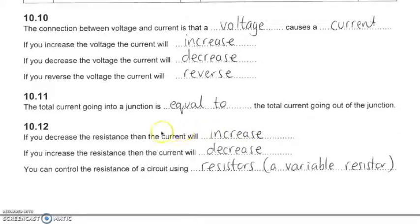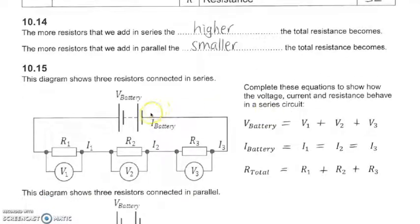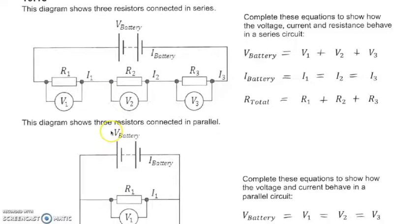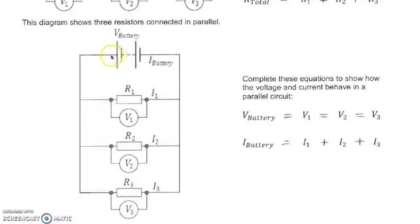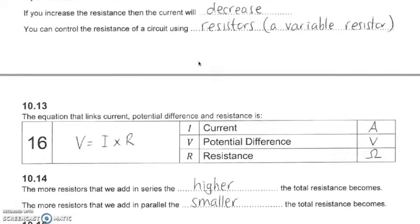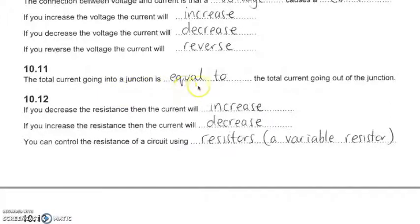We're going to talk about some principles of current. The total current going into a junction has to equal the total current going out of that junction. Let's say there's two amps going from this terminal—it's going to be two amps around the entire circuit. Whereas if we look at this parallel circuit here, if we've got three amps coming from this positive end and these resistors are all equal, you're going to get one amp passing through there, one amp passing through there, one amp passing through there, and they will all join back together to make three amps again. That's this principle explained—the total current going into a junction is equal to the total current going out of that junction.